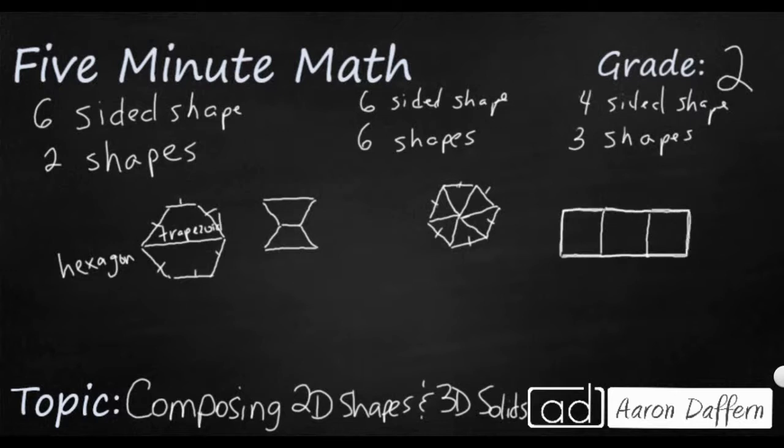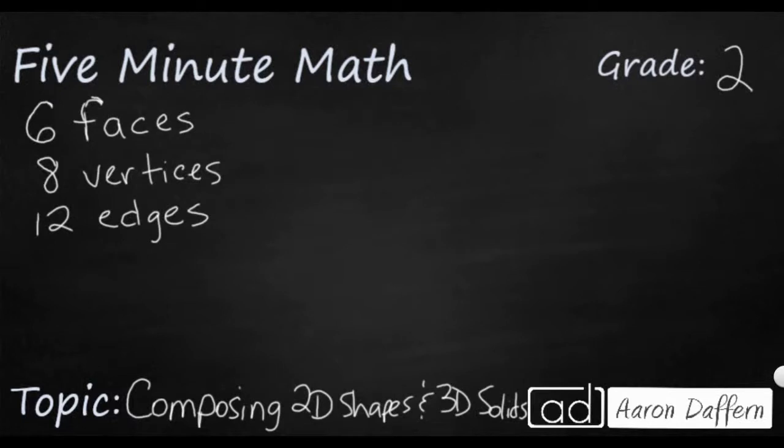Now let's look at a three-dimensional example. We're looking to see if we can build a shape that's got six faces, eight vertices, and 12 edges, and I need to use three solids, three three-dimensional solids to build this shape. So I know that's six faces, eight vertices, and 12 edges. Well, that's just a simple cube.